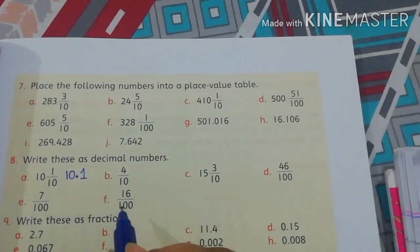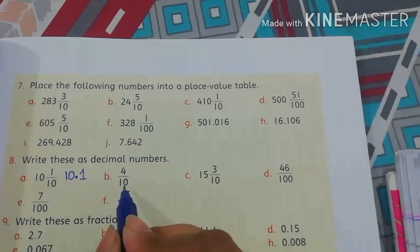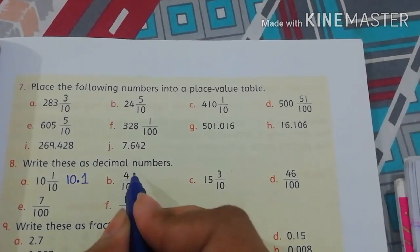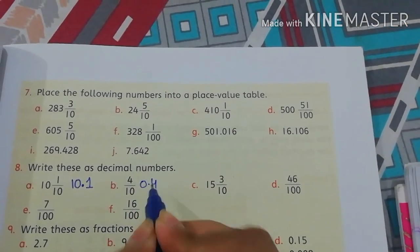Part B: 4 by 10. In this fraction, denominator is 10. That means, after decimal we place one value. That is 4. So, 0.4.